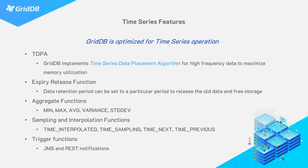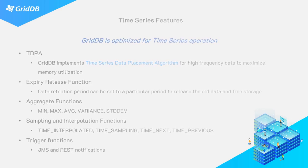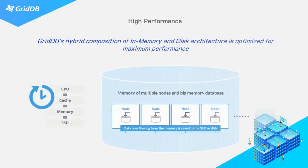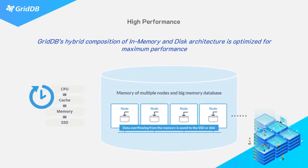GridDB has a memory-first, disk-second storage architecture, which is a fancy way of saying it's mostly an in-memory database. Stale data eventually gets flushed to disk, meaning GridDB maintains its high performance for your workloads.